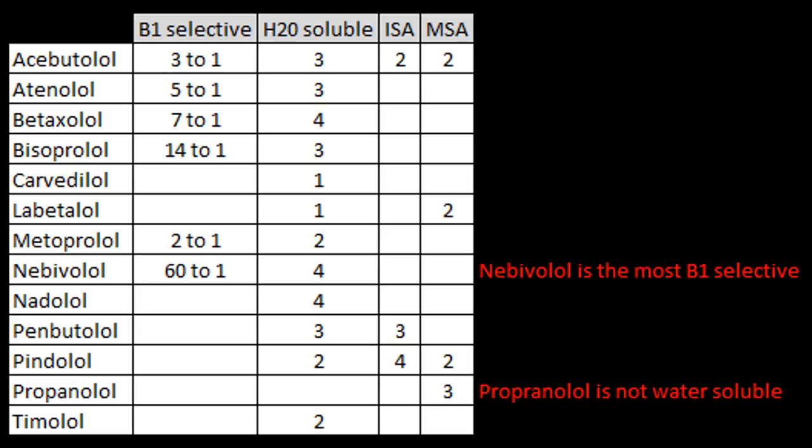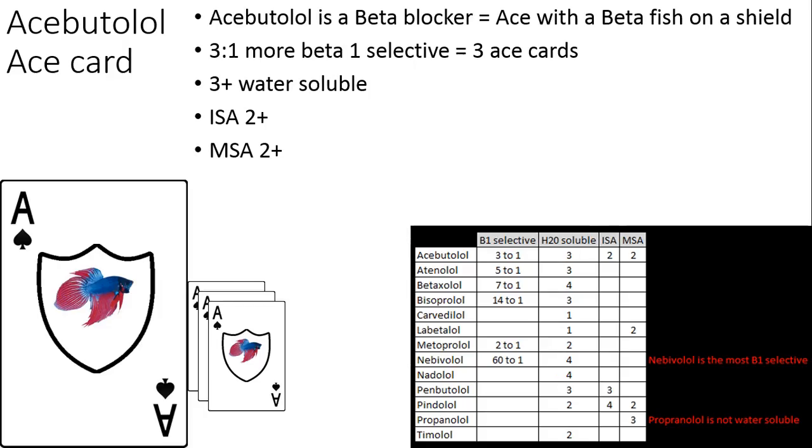That's propranolol, which is not water soluble at all, and carvedilol and labetalol are both not very water soluble. I do not yet know what ISA or MSA stand for, so I've included the information here but have not yet learned that — I apologize. It's also going to talk about how beta-selective something is, so for example nebivolol is 60 times more beta-1 selective than it is beta-2.